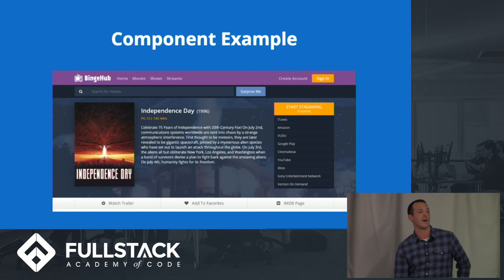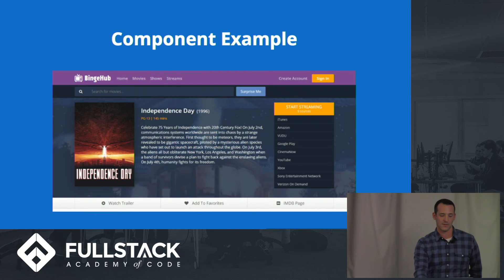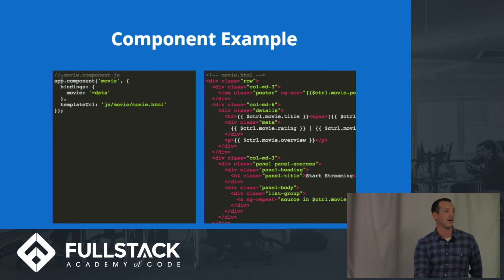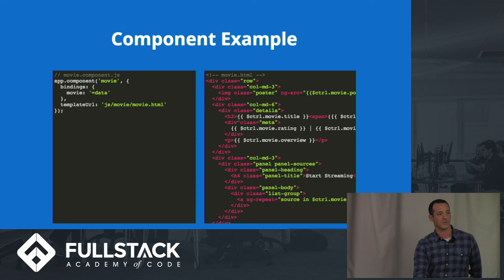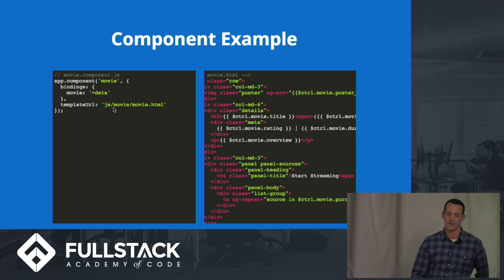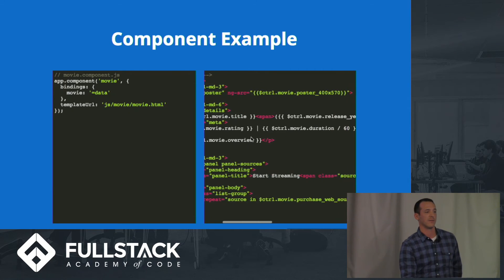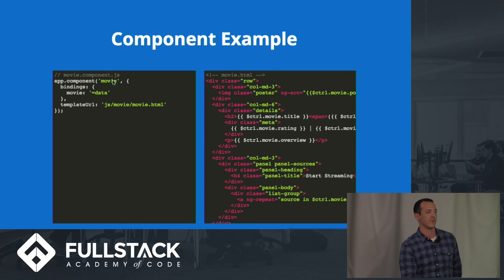Another example comes from my Stackathon project — a single movie view. I used a component structure for this. We're building a component on the main app called movie. We're binding data to it, passing things down from a parent controller into this stateless component. We're using a templateUrl, and on the right we have the template. Notice we use $ctrl. If you don't pass through anything regarding a controller, it's considered a stateless component — but by default it's going to give you $ctrl and you can access all the properties through this simple component.